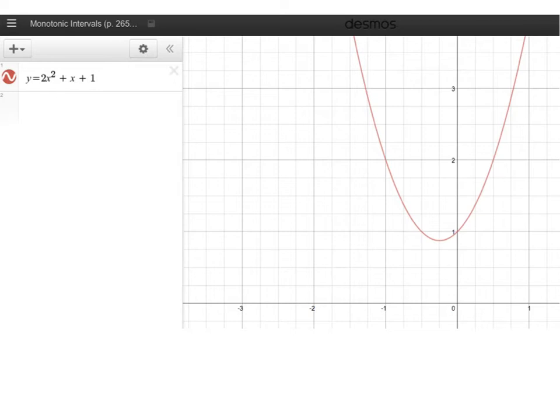Actually, I signed off a little early there. I wanted to show you. If you throw our function that we were investigating into a graphing tool like Desmos graphing calculator, you'll see that we did interpret this correctly. That on the left hand side, this function is decreasing up until this point right here, which you can see on my grid here is negative 1 fourth. And then it's increasing on this side.